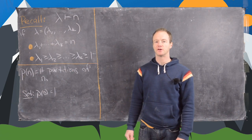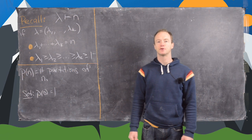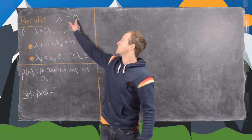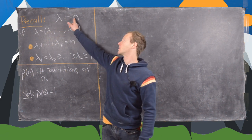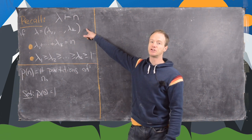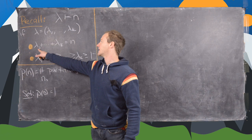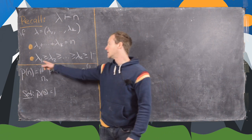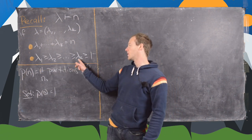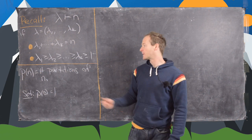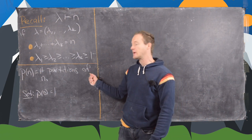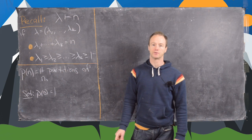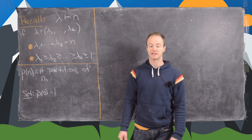This is the second in a series of videos where we're going to look at integer partitions, leading up to a proof of the Rogers-Ramanujan identities. We say λ is a partition of n if λ is a k-tuple where the sum of the parts λ₁ plus up to λ_k equals n, with the non-increasing rule λ₁ ≥ λ₂ ≥ ... ≥ λ_k ≥ 1. We define p(n) as the number of partitions of n, and set p(0) = 1 to make things work out nicely later.